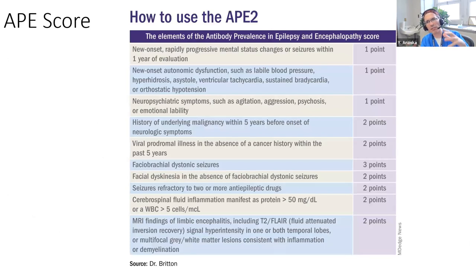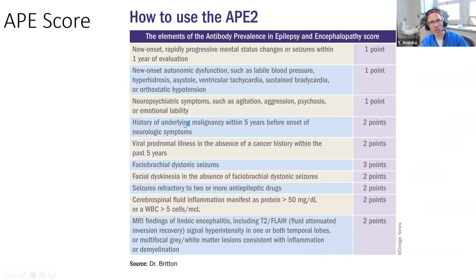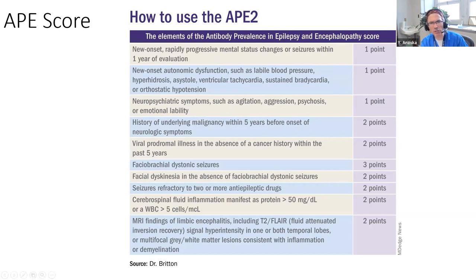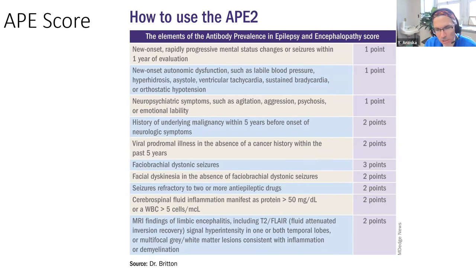The APE2 score features you want to assess on history include: seizures, abnormal movements, CSF and MRI findings, sleep disturbances, and neuropsychiatric issues. This gives a pretty good sense that autoimmune encephalitis is occurring.